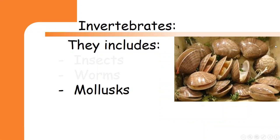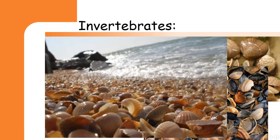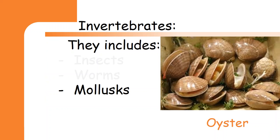Do you know that this is an animal? Where can we find these animals? Yes, on the beach. These animals live inside this shell, and when the animal dies, the shell remains on the beach. This animal is called an oyster, and it belongs to molluscs.